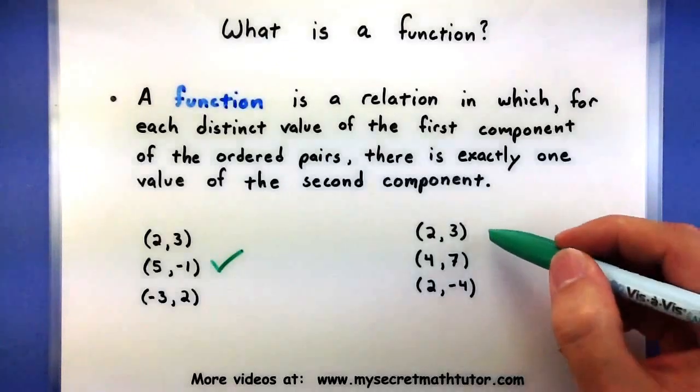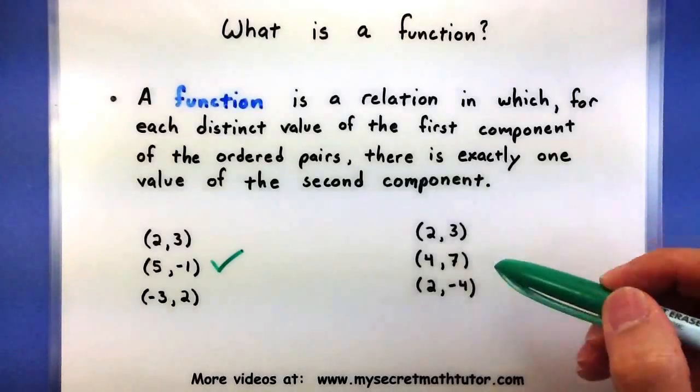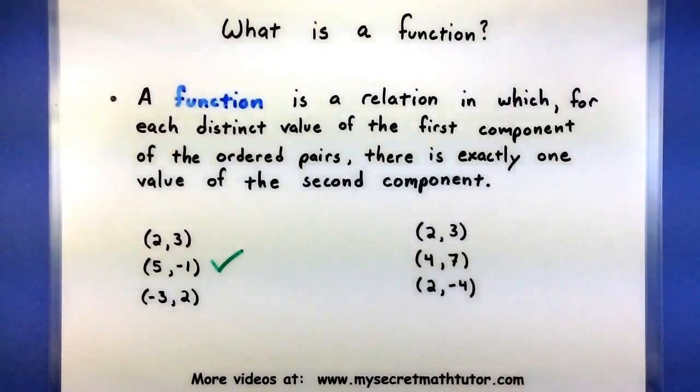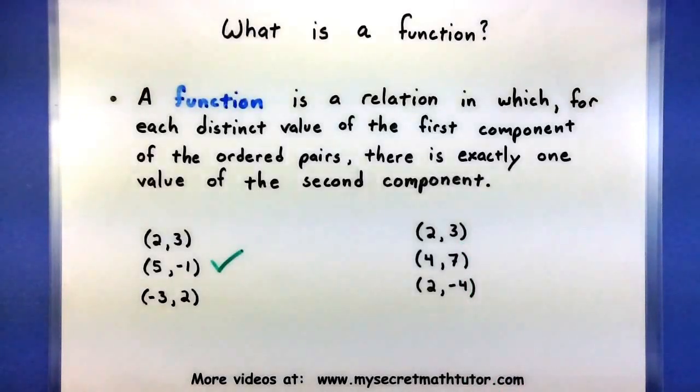Now contrast that with this set of ordered pairs over here. Here, this one is actually not a function, and the problem lies in the first and third. That's because if you're looking at this, two is associated with three, and two is also associated with the negative four. Definitely not a function when that happens.